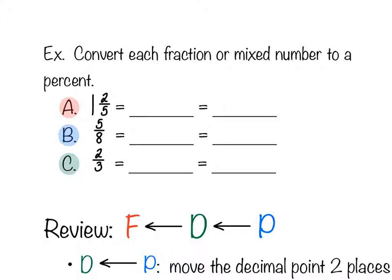In example A, we're converting the mixed number 1 and 2/5 to a percent. The whole number 1 goes in front of the decimal. For 2/5, that's 0.4, so the decimal is 1.4. When we slide the decimal two spots to the right, 1.4 becomes 140 percent — we add an extra zero.